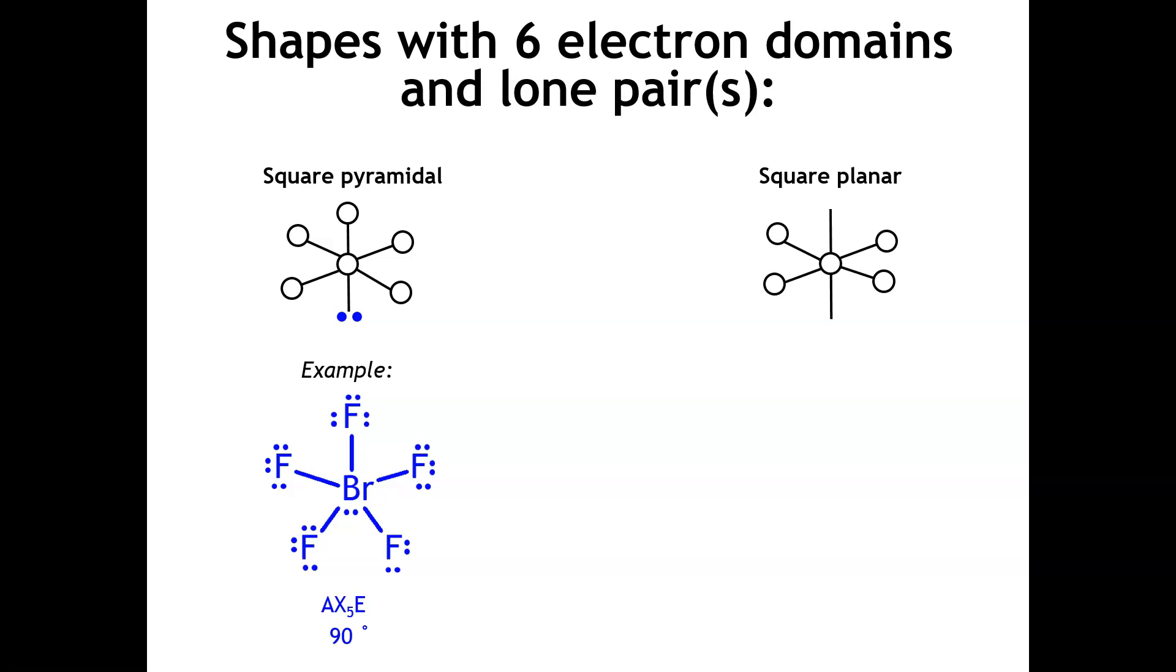If we take one of the other electron pairs and arrange it so that we now have those two in opposite positions, this is now called square planar. Something like this would be XeF4, where we have four terminal atoms and two unshared pairs of electrons. It's called square planar because it literally is square and it's flat.